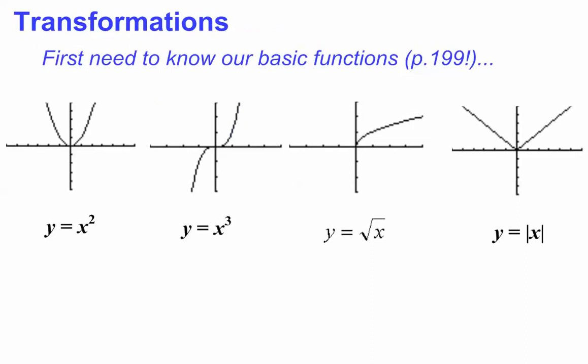First, I want to remind you of some basic functions we should know. Everyone should know y = x², that's our basic parabola. Then y = x³, this kind of snake-looking thing. y = √x gives us this half of a sideways parabola, and the absolute value function y = |x| gives us this V shape.